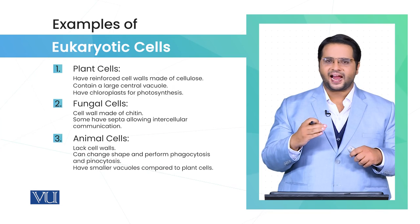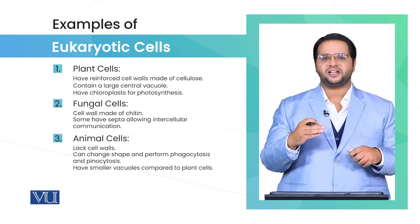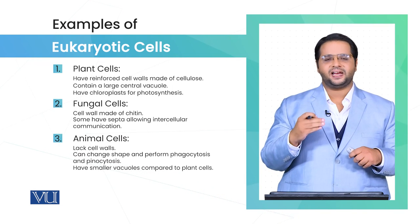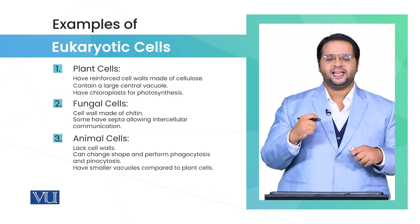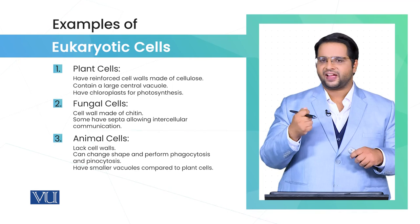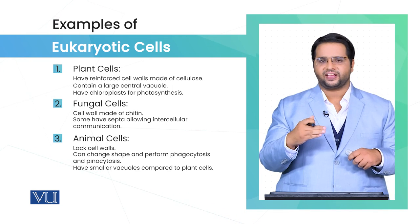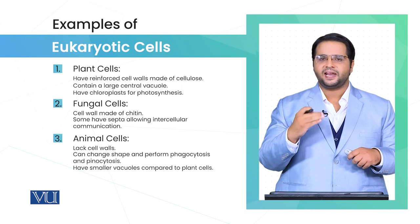In addition to that, another major difference between the plant cell and the animal cell is the vacuole. Plant cells have one large vacuole, while animal cells have small vacuoles.